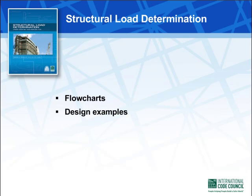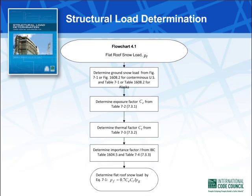The book contains numerous flowcharts and completely worked out design examples so that the reader can efficiently learn and properly apply the load provisions. The flowcharts provide a roadmap that guides the reader through the intricate requirements in the code. Included in the flowcharts are the applicable section numbers and equation numbers from the IBC and ASCE 7. Shown here is a flowchart from Chapter 4 on snow loads.